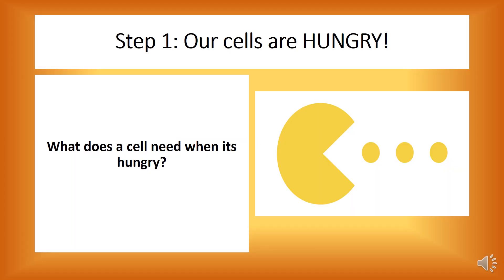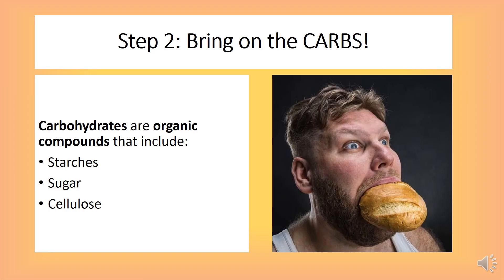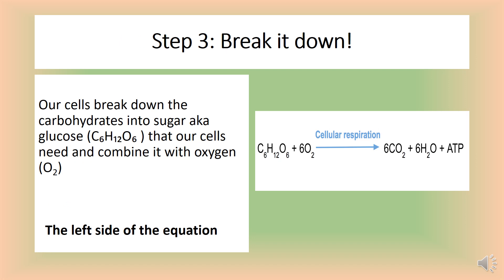When you start feeling tired and run down, your cells are getting hungry. Our cells need carbohydrates — bring on the bread — which are classified as organic compounds. These take the shape in the form of starches, sugars, and cellulose. Our cells break down the carbohydrates into sugar, also known as glucose — represented by C6H12O6 — that our cells need, and combine it with oxygen, O2, which can be seen on the left side of the equation.